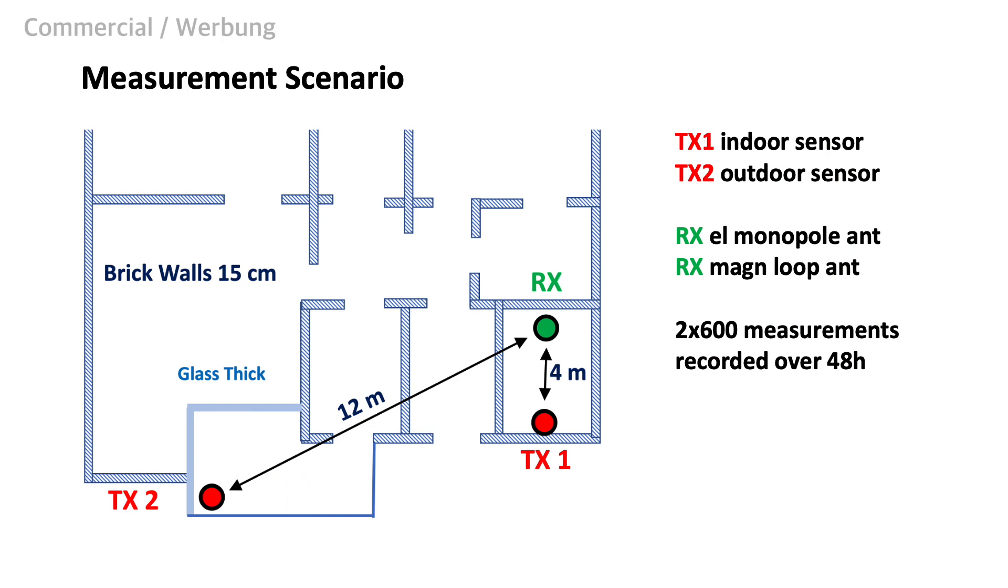The best way to judge antenna performance is the comparison with a reference in real life scenarios. I chose the comparison between a quarter wave monopole antenna and our new magnetic loop antenna. We have two transmitters to cover different wave propagation paths. The propagation path to transmitter one is a line of sight scenario within the same room. We can expect a strong direct signal. However, there will be also a lot of reflections from the walls.